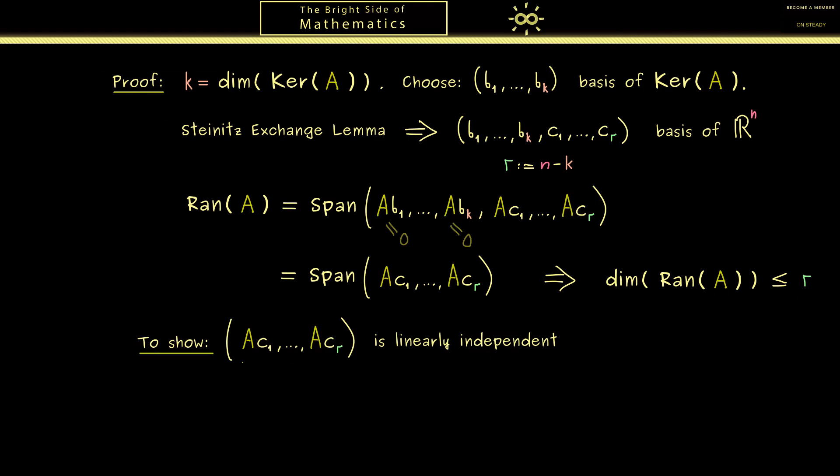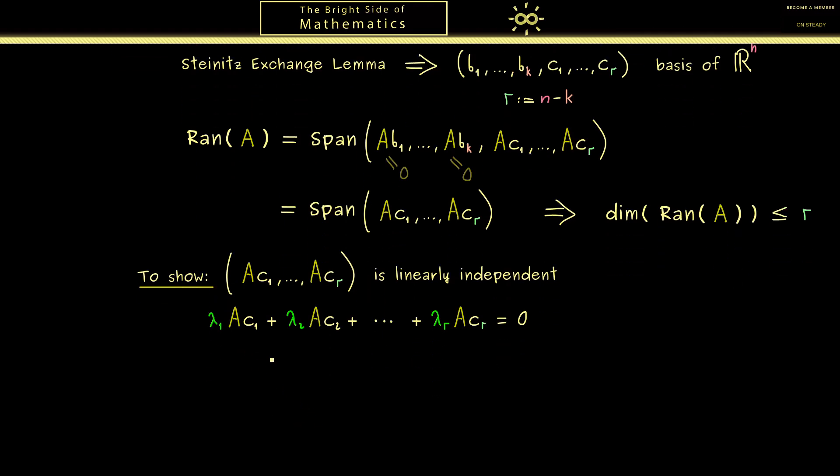And in order to show that, as always, we have to choose an arbitrary linear combination for the zero vector. And then we just have to show that all our coefficients lambda here are actually zero. Now, for the first step, we look at the left hand side. And then we see, we can easily use the linearity or the properties of the matrix vector multiplication. So roughly said, we pull in the scalars and the addition signs. Hence, in the end, we have the matrix A times the linear combinations of vectors. And of course, these vectors are lambda_i c_i, where i goes from 1 to r.